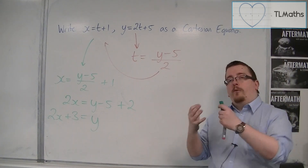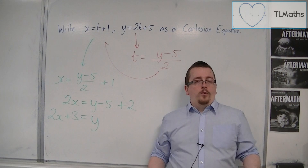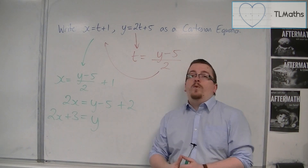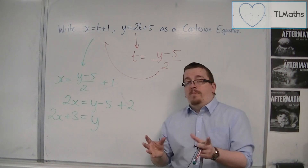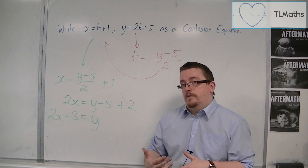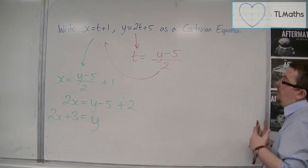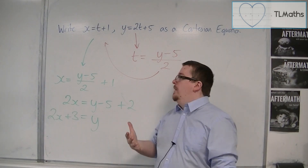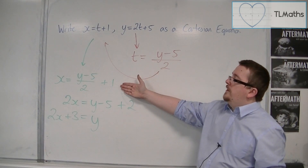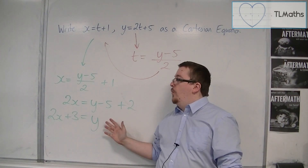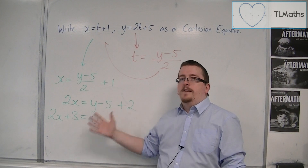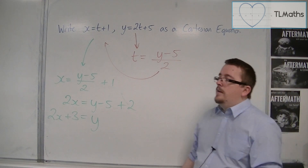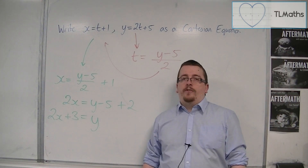Not all of what's been shown will work for all situations. There will be situations where you cannot write a pair of parametric equations as a Cartesian equivalent — that may not be possible. And it might not always be possible to rearrange into y = form once you have the Cartesian equation. This is a nice example with many approaches, but we will see some restrictions on this in the coming videos.